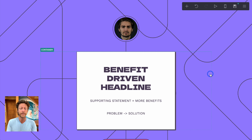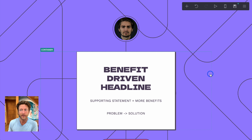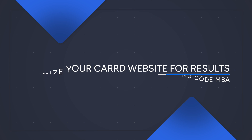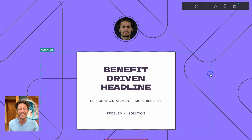If you have a Card website, or you're thinking about using Card or a similar website builder, then it's so important that you optimize this website so that you get the results that you want. A lot of people, when they start off building a website — let's say for an app sales page — miss a lot of the key elements that are going to set them up for long-term success. So in this video, we're going to go over how to optimize your Card website for results. A lot of this is low-hanging fruit that makes massive changes to the end results.